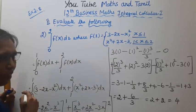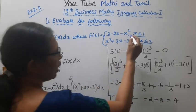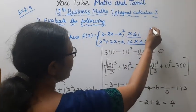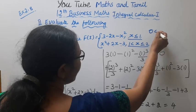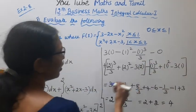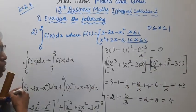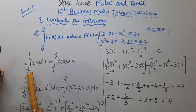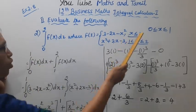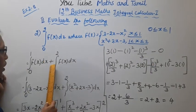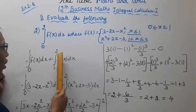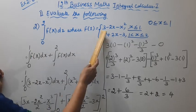Since 0 is in the interval where x is less than or equal to 1, we split the integral. We write it as the integral from 0 to 1 of f(x) dx, plus the integral from 1 to 2 of f(x) dx.